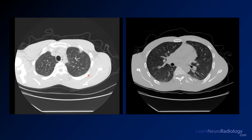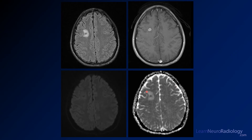Here are the images from the chest CT, meant to provide a clue that this is a systemic disease. You can see ground glass nodules and consolidation in the left lung, and a mass in the ribs with pleural thickening and osseous destruction. This confirms you are looking at a systemic process involving multiple organ systems.